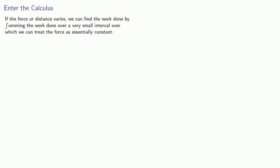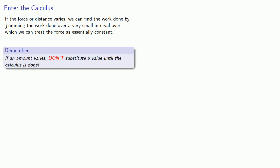If the force or distance varies, we can find the work done by summing the work done over a very small interval, over which we can treat the force as essentially constant. And so one important idea to keep in mind is that if an amount varies, that means don't substitute a value until the calculus is done.